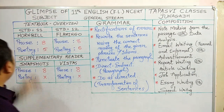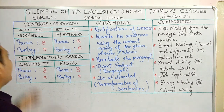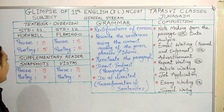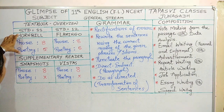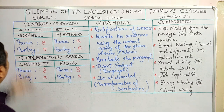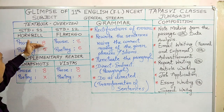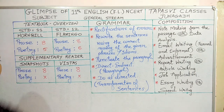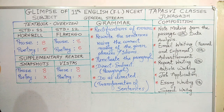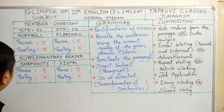Now let's begin. In 11th standard we have two textbooks, and in 12th standard as well we have two textbooks — one as a main textbook and another as a supplementary reader. We have Hornbill as the main textbook, and in Hornbill we have eight prose and five poems available. In the supplementary reader, Snapshots, we have eight prose available but no poems.